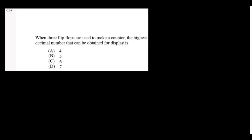When 3 flip-flops are used to make a counter, the count is 2³ = 8 states, counting from 0 to 7. So the highest decimal number that can be displayed is 7.